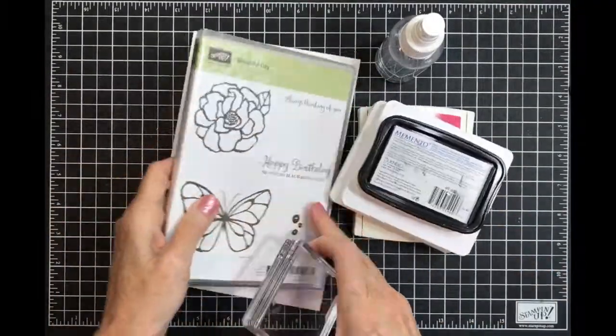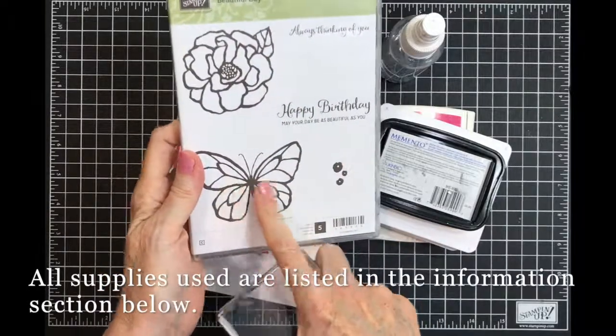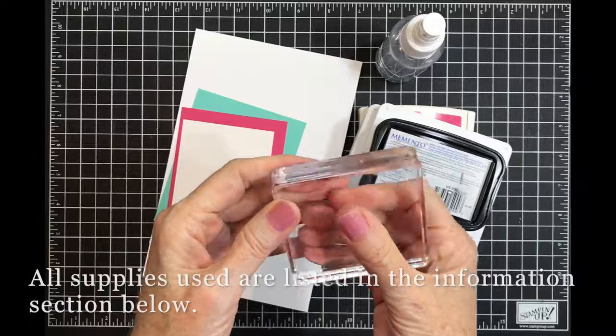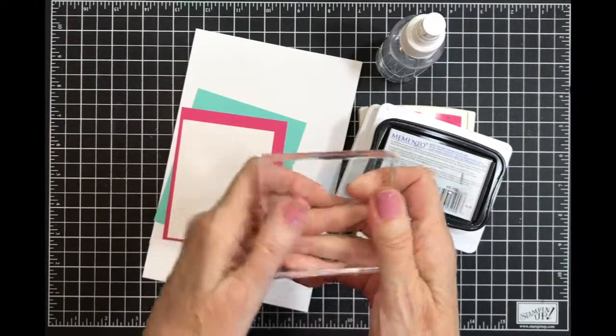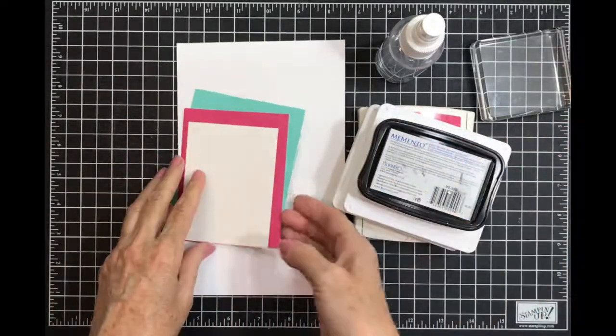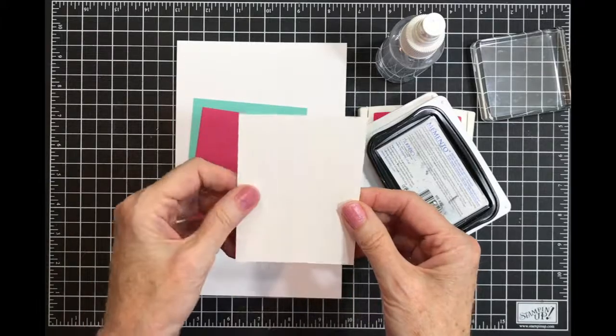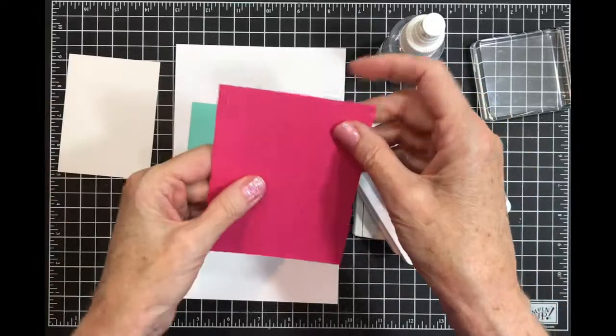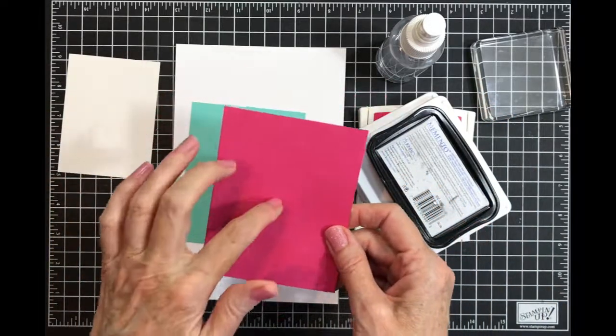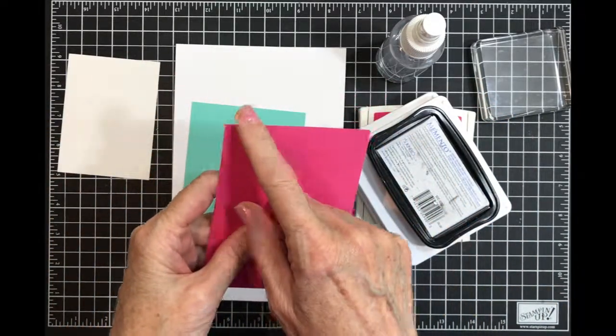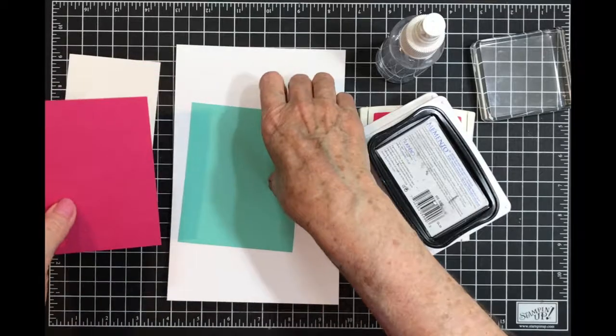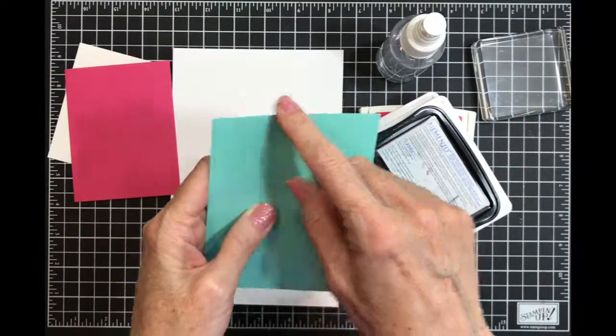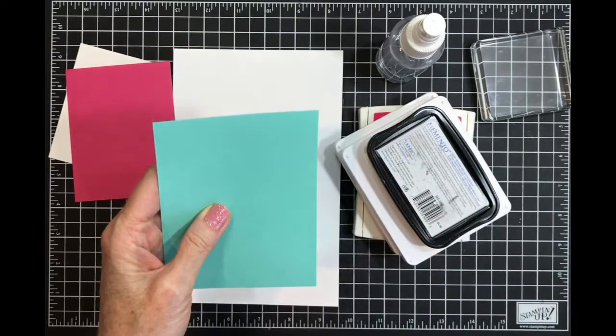For today's card I'm going to be using Beautiful Day. I'm specifically going to be using the butterfly. I need a clear block that has nothing on it. I'm going to be inking it up. I have a piece of shimmery white cardstock that is 3x4, a piece of melon mambo that's 3.5x4.5, and a piece of coastal cabana that's 3.75x4.75.